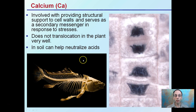Looking first at calcium, represented by CA, it's involved with providing structural support to cell walls and serves as a secondary messenger in response to stress. It does not translocate well in the plant — keep that in mind as a grower — and you can show deficiency symptoms particularly in the newer growth.